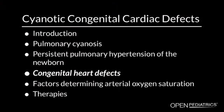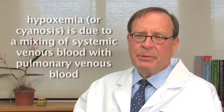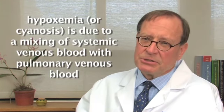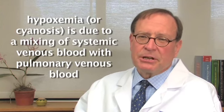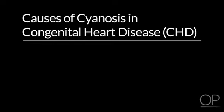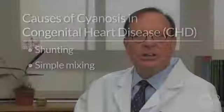Moving on to congenital heart defects: hypoxemia, or cyanosis, is due to mixing of systemic venous blood — which is blue — with pulmonary venous blood. There are two reasons that red and blue blood can mix: one is shunting, and the other is simple mixing. These are diagrams of two types of heart. The heart on the left has a ventricular septal defect; the heart on the right, an atrial septal defect.